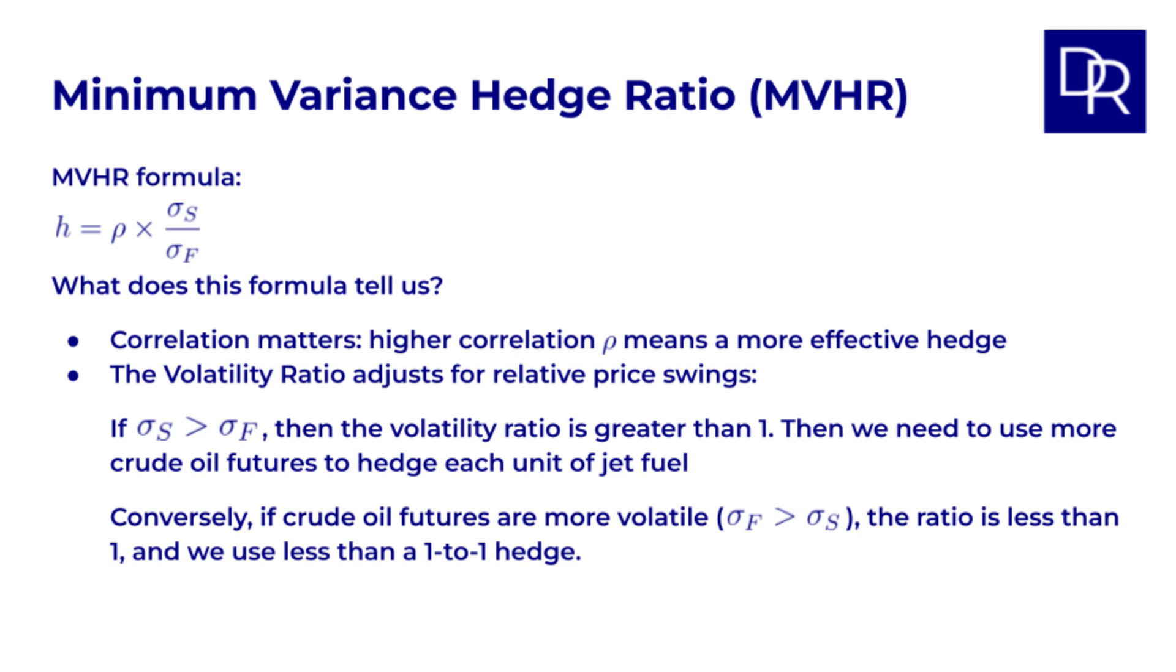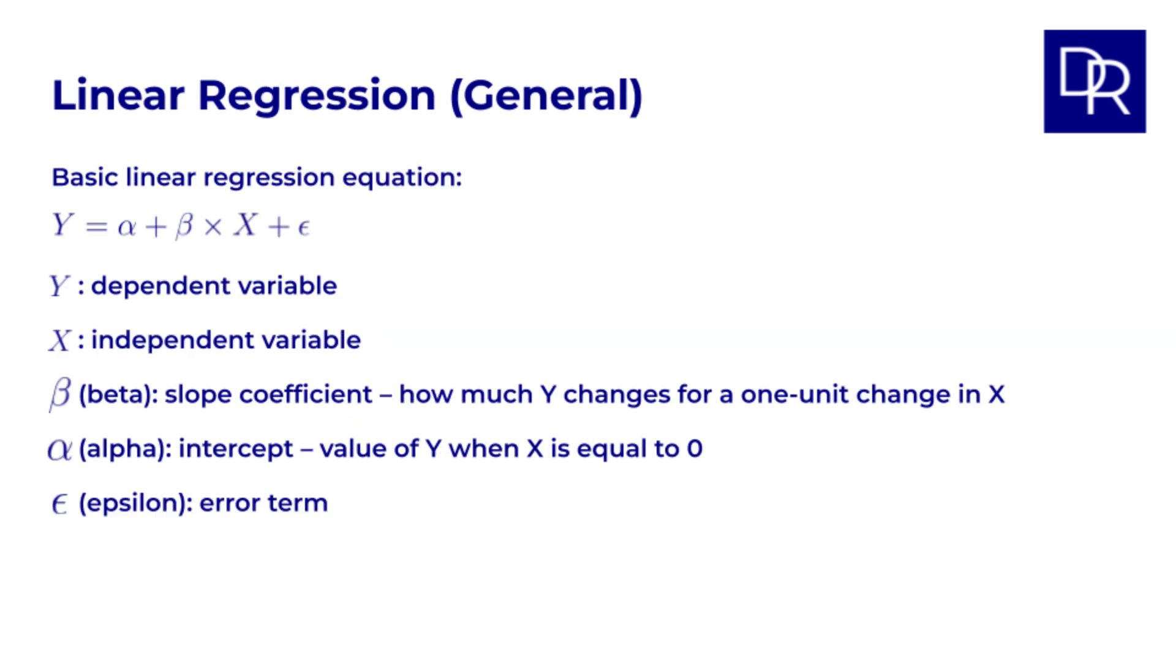Conversely, if crude oil futures are more volatile, sigma f greater than sigma s, the ratio is less than 1, and we use less than a 1 to 1 hedge. You might think this sounds sensible, but why this formula? Where does it come from? The answer lies in linear regression. MVHR isn't just pulled out of thin air, it is statistically derived to minimize variance. Think back to basic linear regression. We are trying to find the best fitting line to describe the relationship between two variables.